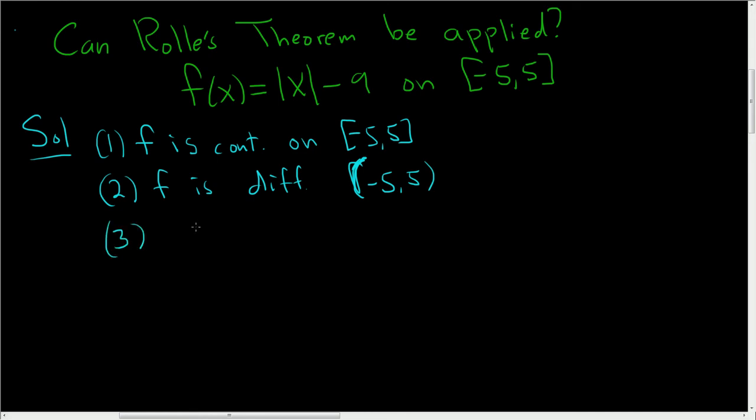And condition 3: if the values at the endpoints are the same. In this case, f of 5 should equal f of negative 5. So if all three things happen, then Rolle's says that there exists a number c in our open interval such that the derivative of f at c equals 0.